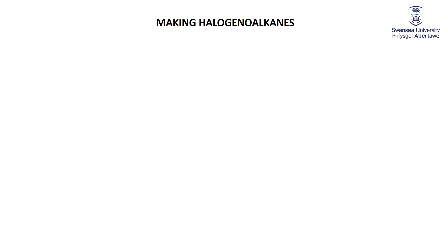Halogeno-alkanes should not be strange to you, because we've talked about them in every single one of our organic modules so far. When dealing with alkanes, we saw you could react them with a halogen and light via a free radical mechanism — the halogenation of the alkane. This is a non-specific reaction, but because the tertiary free radical is much more stable than secondary, which is much more stable than primary, it is actually a fairly good way to make tertiary halides.